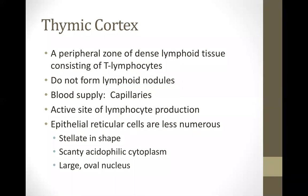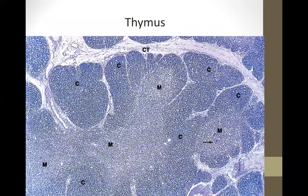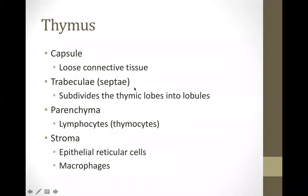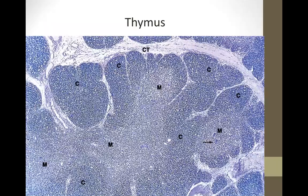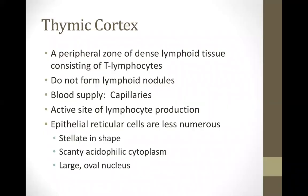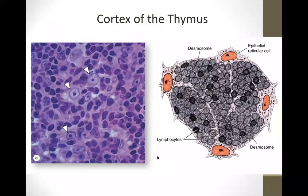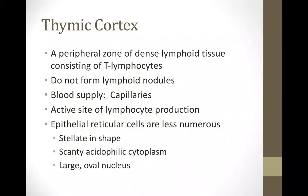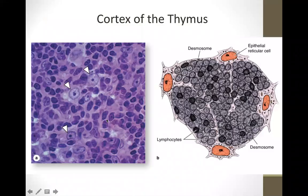The thymic cortex is a peripheral zone of dense lymphoid tissue consisting of thymocytes. There are no lymphatic nodules in the thymic cortex. The blood supply is provided by capillaries, and this is the active site of lymphocyte production. The epithelioreticular cells, which form the stroma, are less numerous, stellate in shape with large oval nuclei and scanty acidophilic cytoplasm.